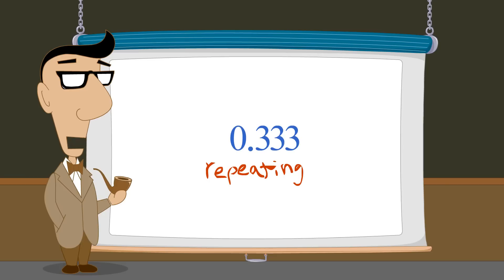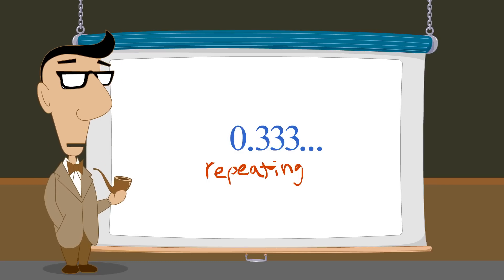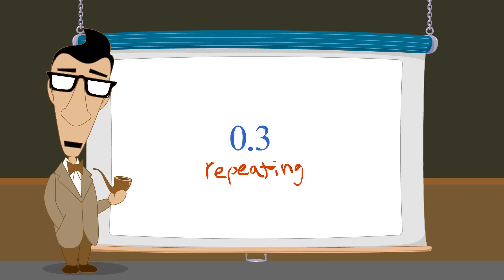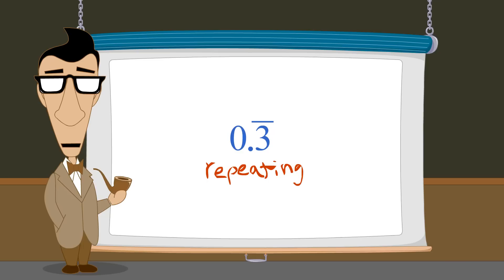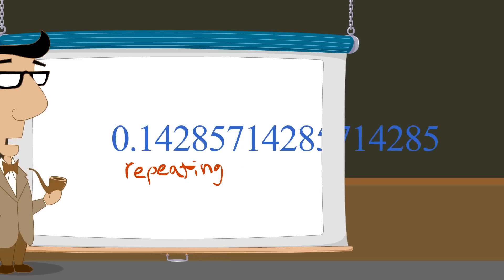Repeating decimals can be written with three dots, called an ellipsis, to indicate that the pattern repeats forever. Or a bar can be placed over the digits which repeat. For instance, we can indicate a repeating three by placing a bar over the three. Likewise, a bar over a sequence of digits indicates that the sequence repeats forever.